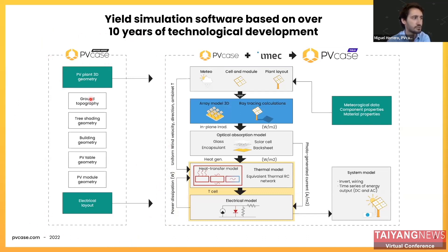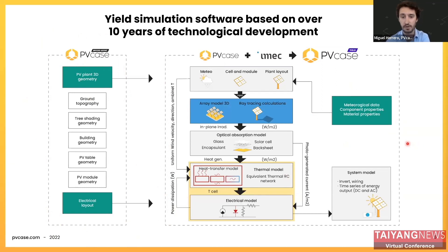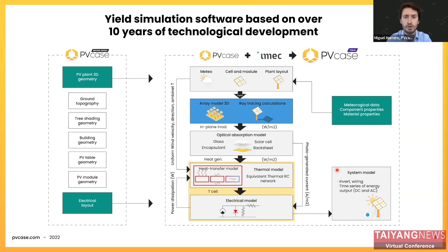The inputs for the model are straightforward: the PV Case Ground Mount design — including the plant geometry and optionally the electrical layout — meteorological data, and the OND and PAN files of the equipment. These inputs inform the optical ray tracing and thermal-electrical models, which have module-level resolution and are optimized to support simulation of bifacial and tracked systems.